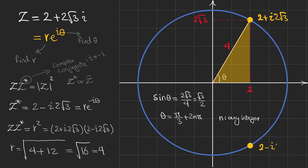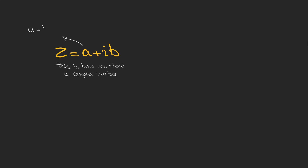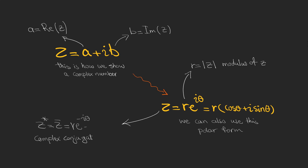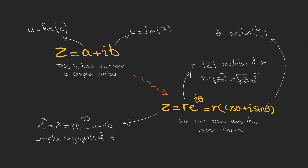Let's review what we've learned. A complex number can be shown in rectangular form with real part a and imaginary part ib, or in polar form where r is the modulus or magnitude. The complex conjugate can be written as r times e to the power of minus i theta, or a minus ib. The relationships between r, a, b, and theta tie everything together.